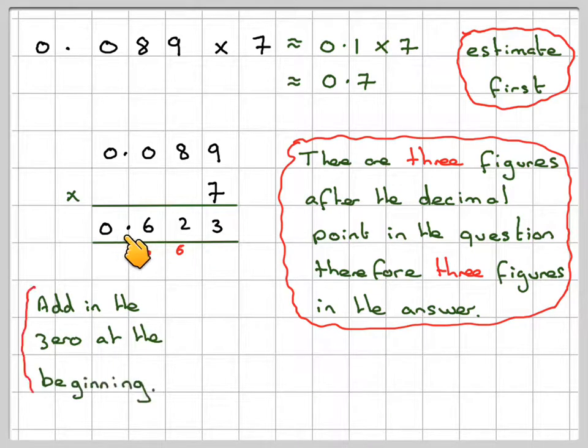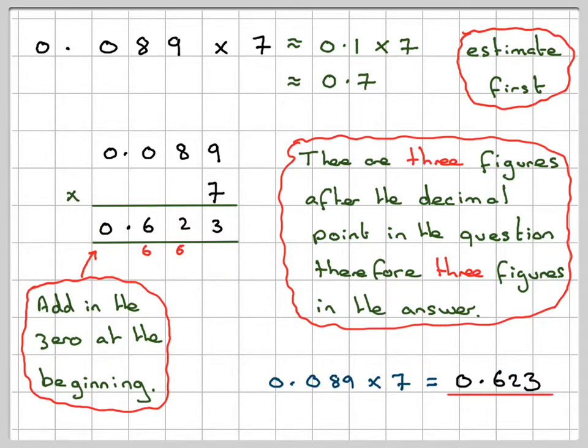So the answer will be 0.623, which is fairly close to 0.7. So 0.089 times 7 is equal to 0.623.